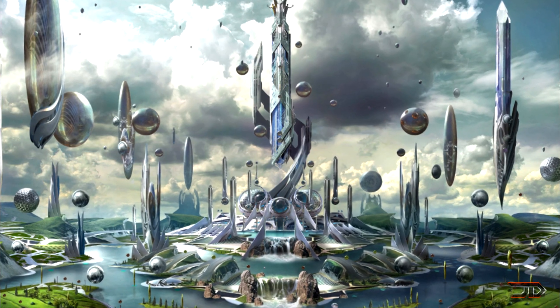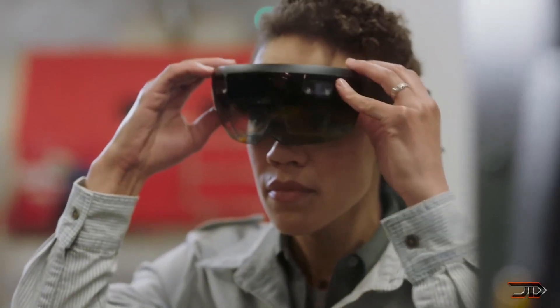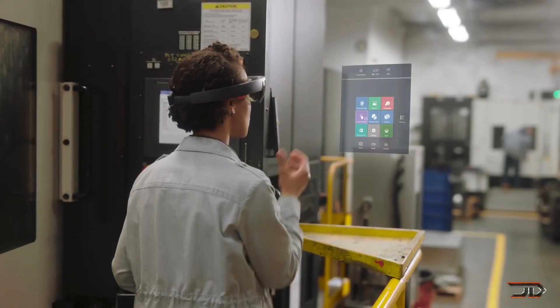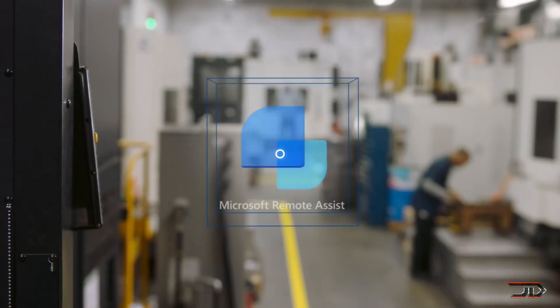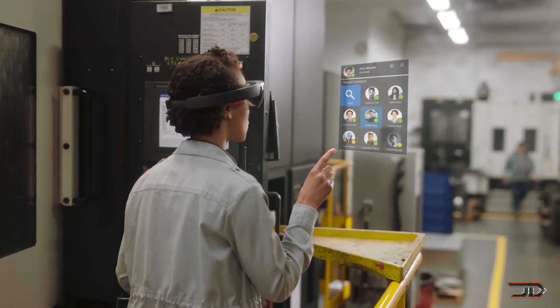But if we take it one step further, augmented reality, which superimposes images and information on the real world, may be the key to power. And it might give one person an information advantage over anyone who does not have access to the technology.